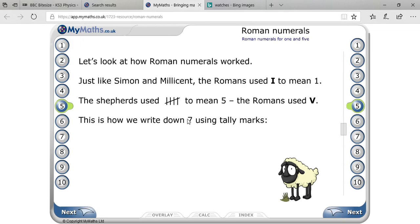The shepherds used 1, 2, 3, 4 standing lines and 1 slant line for 5. Romans used V for 5.